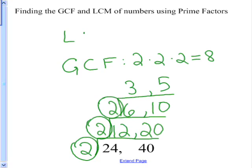To find the LCM, all you need to do is multiply all of the prime factors you found here. 2, 2, 2, 3, and 5.